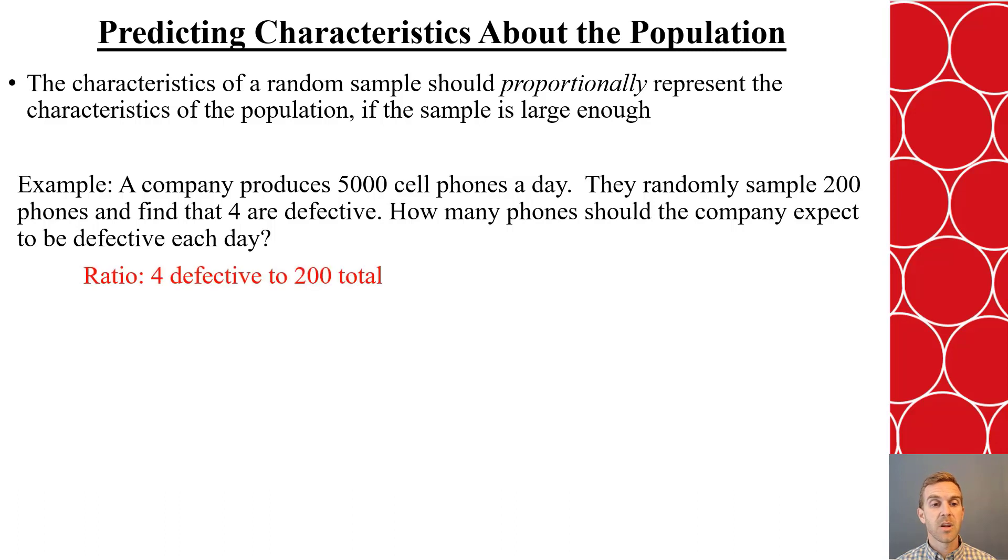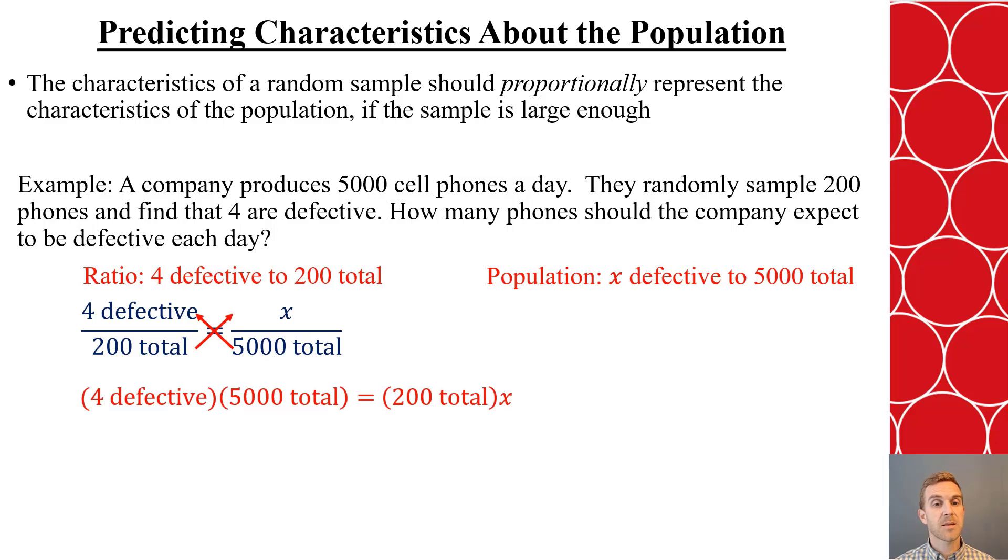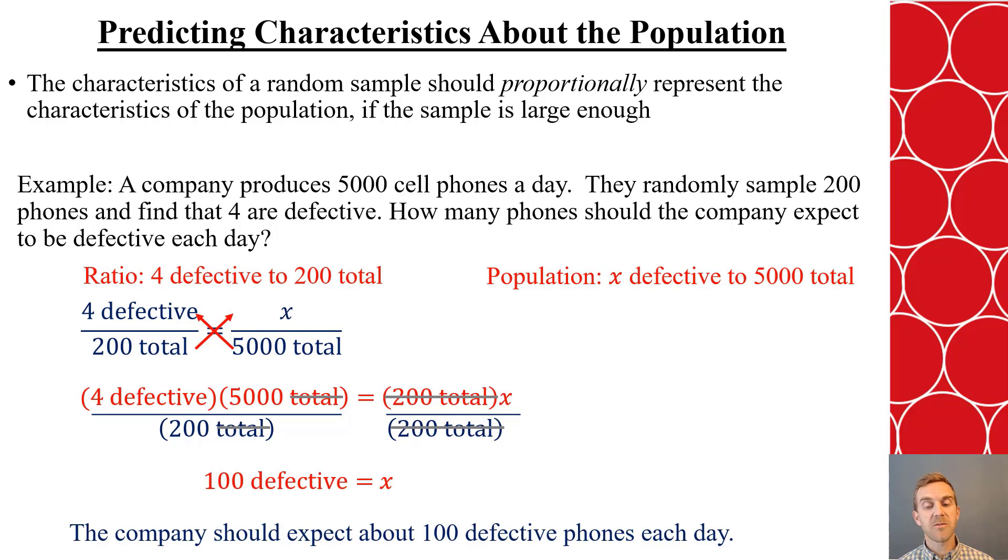So, they know that in their sample, there are 4 defective to the 200 total phones. That means that the ratio of the population should match that ratio of the sample. And we can set up a proportion to help us solve this. So, 4 defective to 200 total should equal x out of the 5,000 total. And I'm putting the units here of defective and total to help us make sure that we're matching our proportion correctly. So, here I will cross multiply. So, I have the 4 defective times the 5,000 total equals the 200 total times x. I'm going to divide by those 200 total from the sample. That will simplify my right-hand side to 1x. And my unit of total over total will simplify to 1, leaving only the defective amount of phones. And when I simplify that, that will come to 100 defective. That means that the company should expect about 100 defective phones each day. And they can only make this expectation if the sample is random.